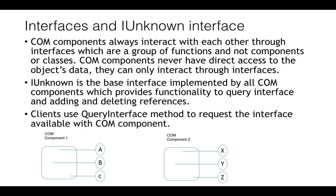Another important thing is interfaces and the IUnknown interface. COM components always interact with each other through interfaces, which are nothing but a group of functions — not components or classes. COM components never have direct access to the object's data; they can only interact through the interface. IUnknown is a very basic interface implemented by all COM components, which provides functionality to query interface, and for adding and releasing references.